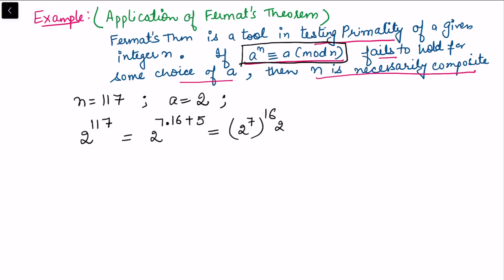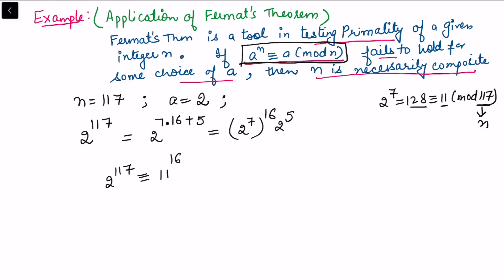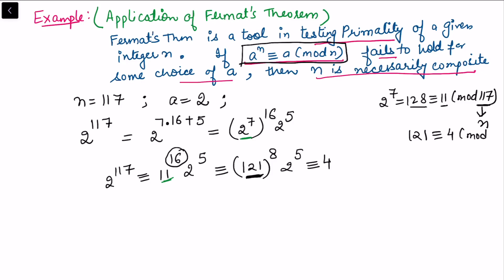We know 2^7 = 128 ≡ 11 (mod 117), since 128 - 11 = 117. So 2^117 ≡ 11^16 × 2^5 (mod 117). We simplify 11^16 = (11^2)^8 = 121^8. Since 121 ≡ 4 (mod 117), we get 4^8 × 2^5 (mod 117), which simplifies to 4^8 × 32. This further reduces to 2^21 (mod 117).